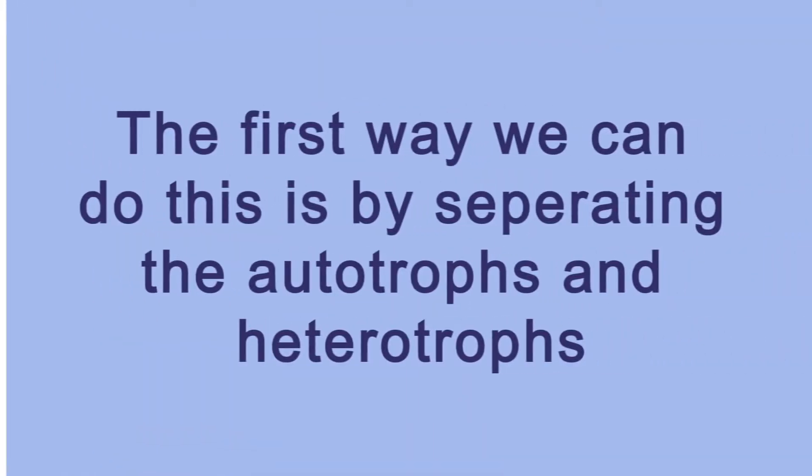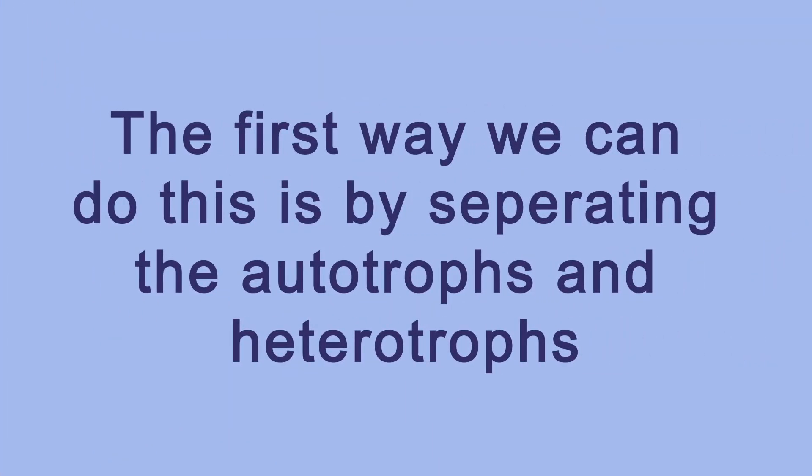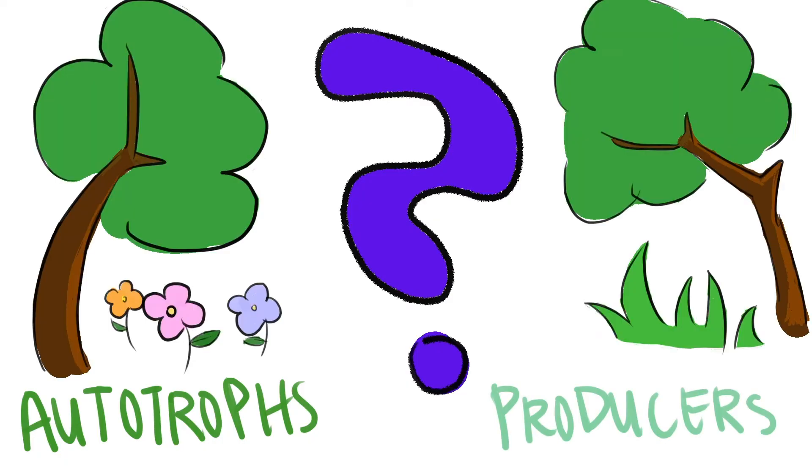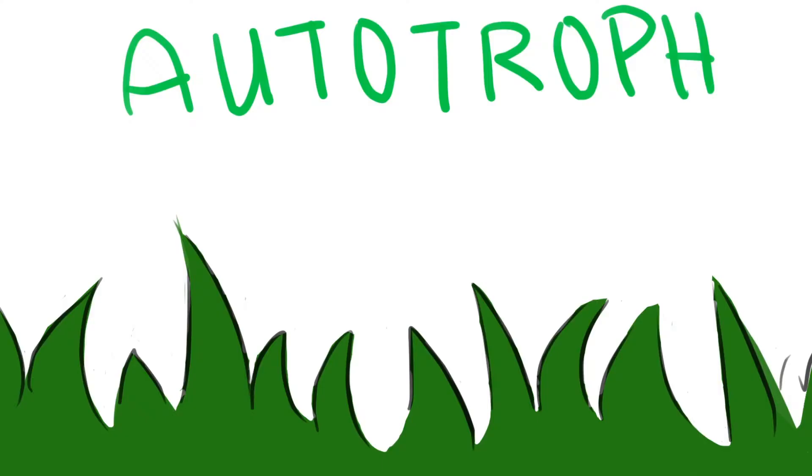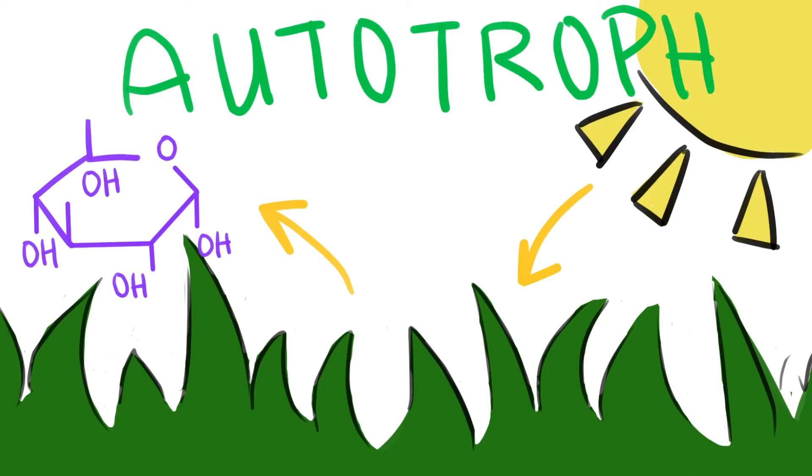The first way we can do this is by separating the autotrophs and the heterotrophs. Now, what do these terms even mean? Autotrophs are also known as producers because they can produce their own food. With that being said, we know that the grass has to be an autotroph because it takes energy from sunlight and converts it into sugar by doing photosynthesis.